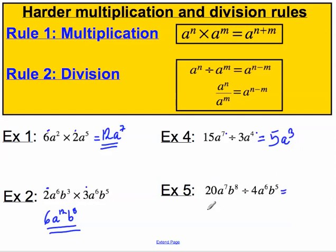And lastly, here we can do the division of the numbers first. 20 divided by 4 is 5. a to the power of 7 divided by a to the power of 6 is a to the power of 7 subtract 6 which is 1. And b to the power of 8 divided by b to the power of 5 is b to the power of 8 subtract 5 or 3. And a mathematician usually writes a to the power of 1 as simply a. So they would finish off by writing 5ab cubed.